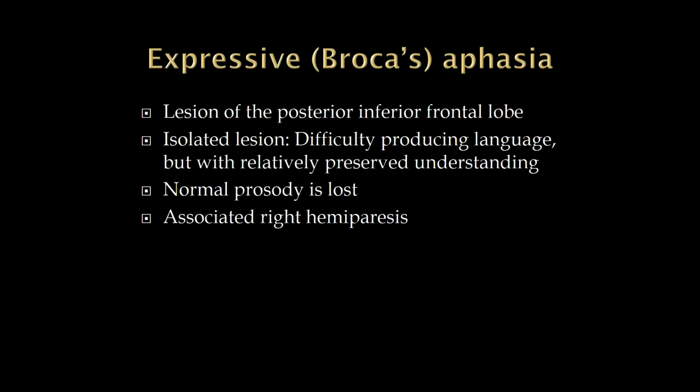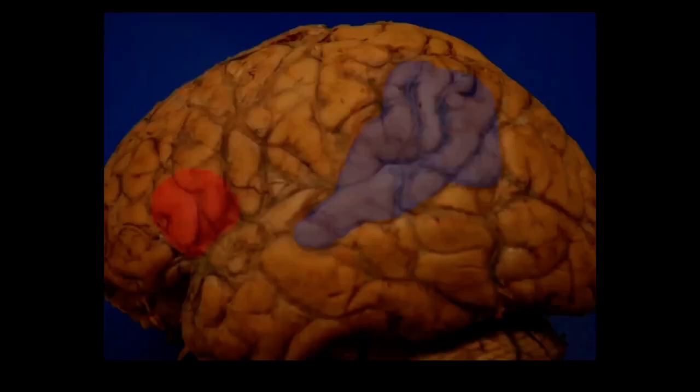Broca's area is immediately adjacent to the precentral gyrus, and they're both in the same vascular territory — the middle cerebral artery. So if we have an occlusion of a more anterior branch of the middle cerebral artery, the patient will have a Broca's aphasia and also weakness on the right side of the body, because it's a left hemisphere lesion. We usually see a right hemiplegia — hemiplegia meaning weakness of one side of the body — along with the Broca's aphasia.